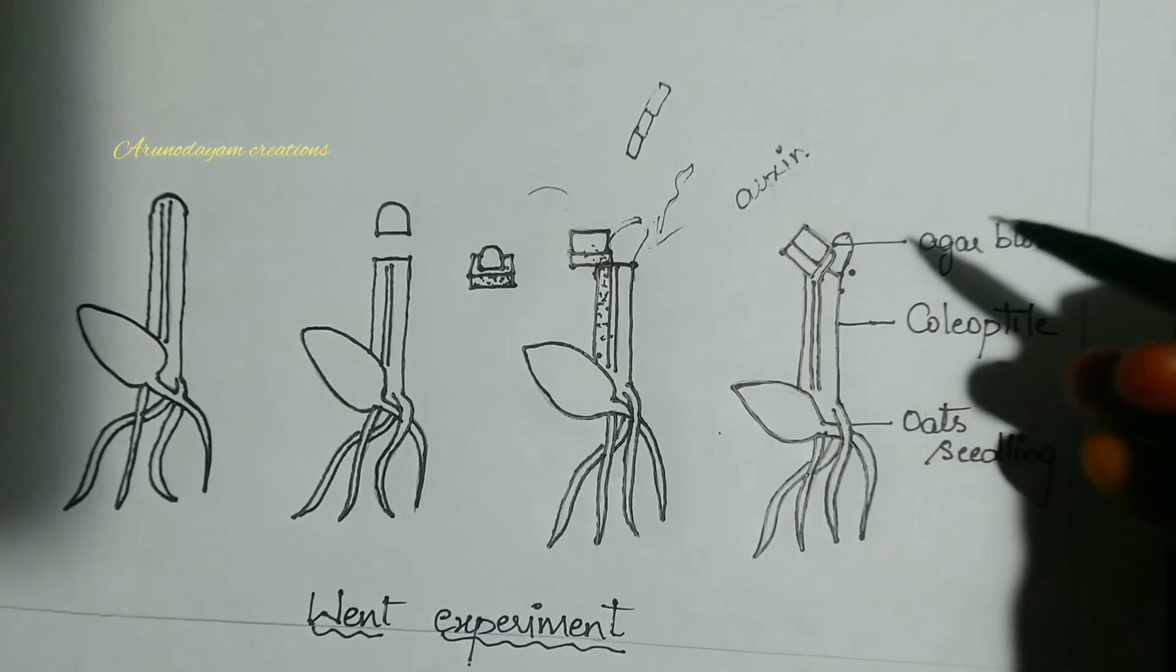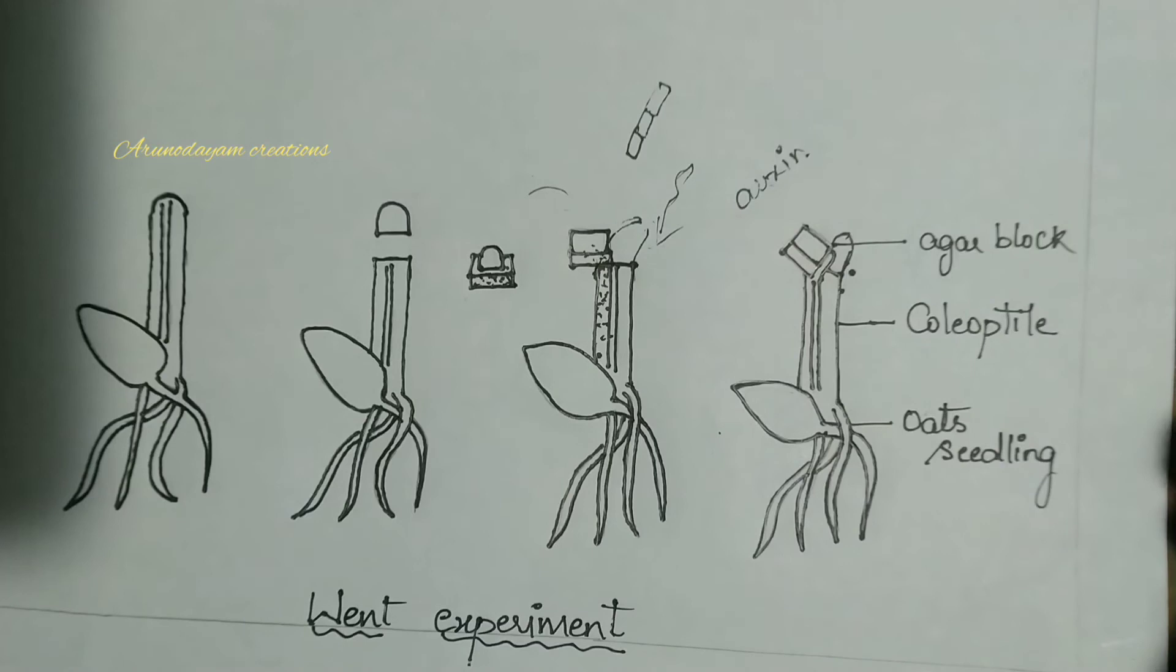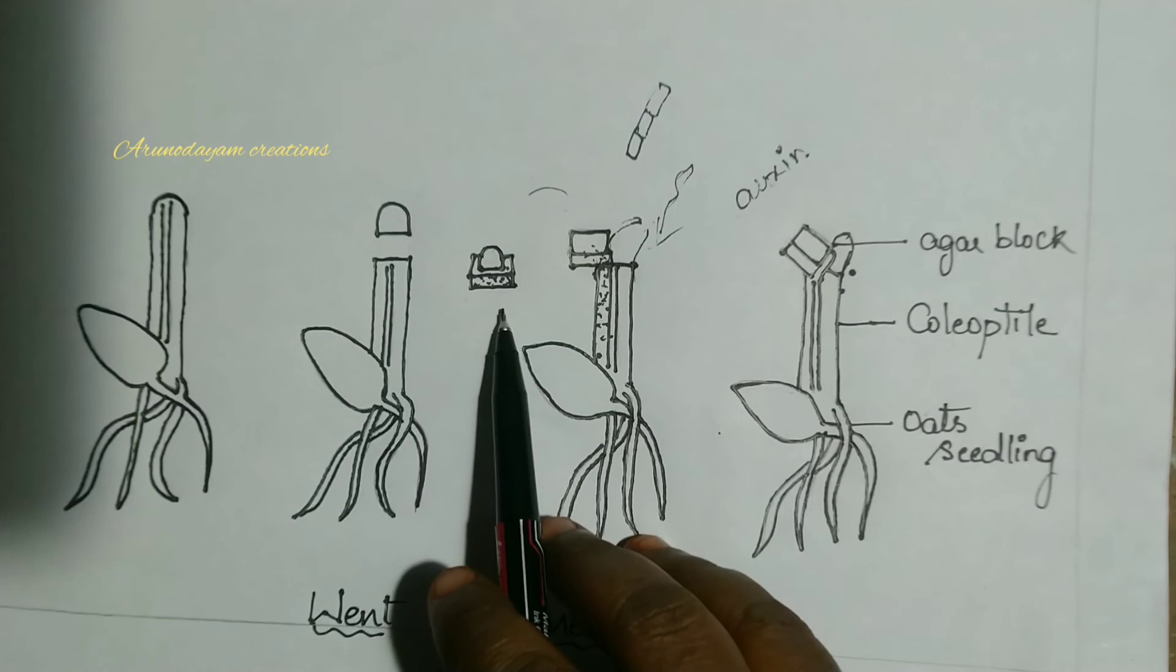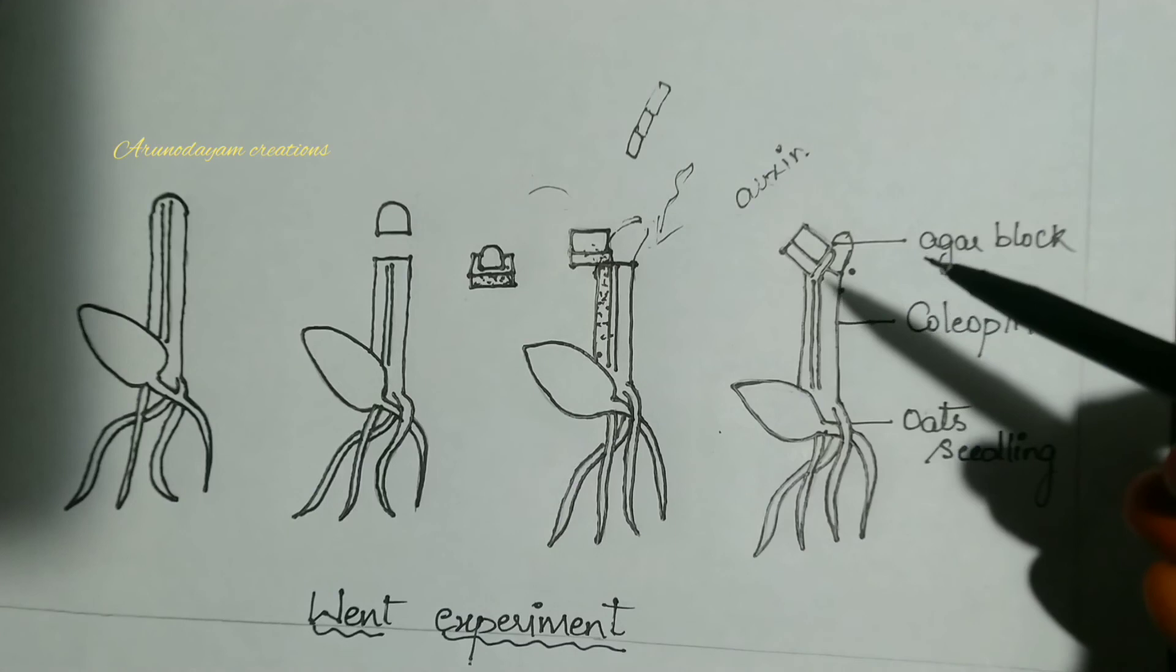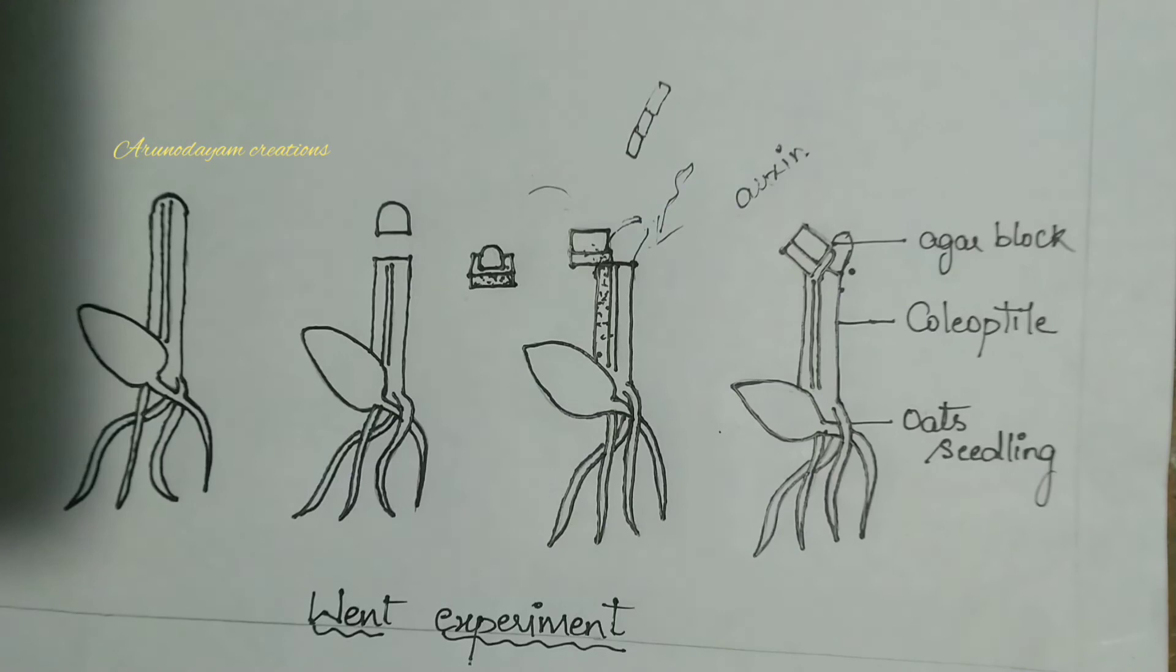This is the Went experiment. He took oats coleoptile, decapitated it, placed it on agar block, then cut it into slices and placed it on one side of coleoptile. He observed bending of plant had taken place away from the side on which agar block was placed, because of the presence of a hormone called auxin. It is responsible for phototropism and cell elongation.